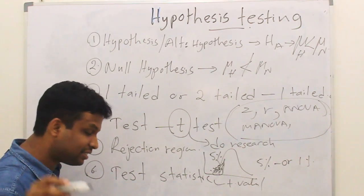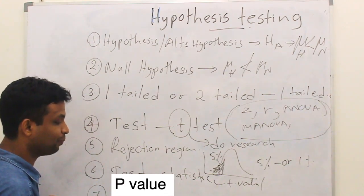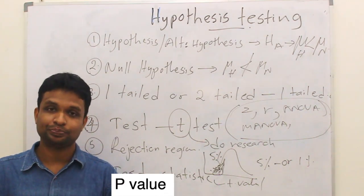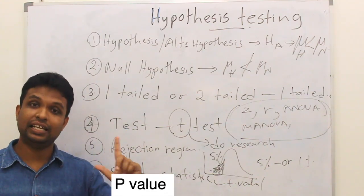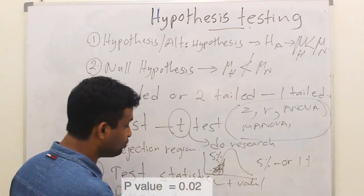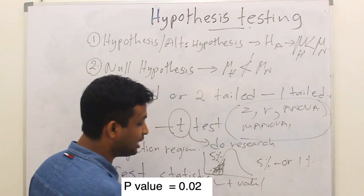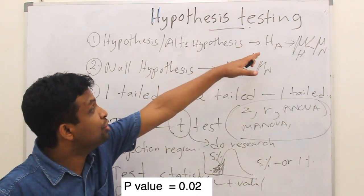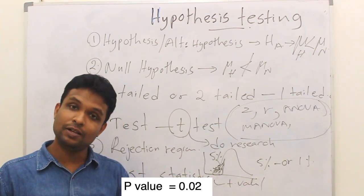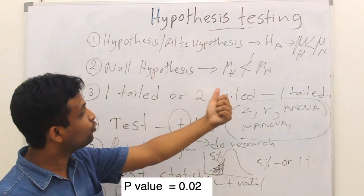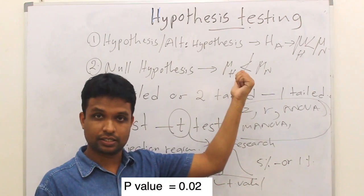Based on the test statistic, the final step is you will get a p-value. If you can't remember what p-value means, please go and watch the lecture on p-value. For example, assume that p-value equals 0.02 — that means 2%. According to this hypothesis, 2% of the normal birth weight will be less than the birth weight of the babies born to HIV-infected mothers.